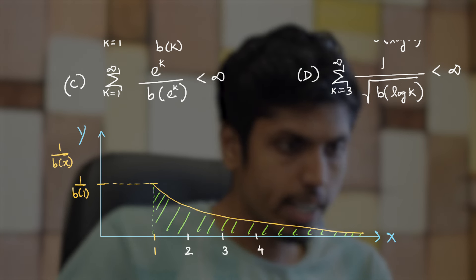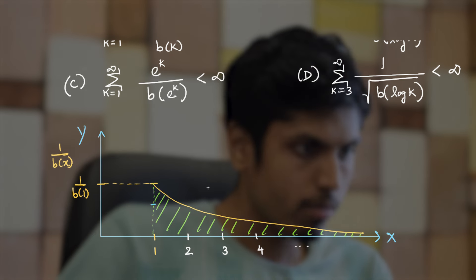We can consider 1/b(2) and the value taken at 3 would be 1/b(3) and value taken at 4 would be 1/b(4) and so on. Clearly, the area formed by these smaller rectangles in blue is less than the area under the 1/b(x) graph.